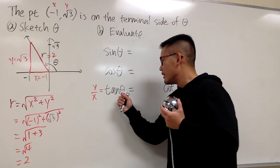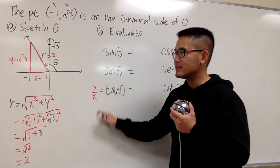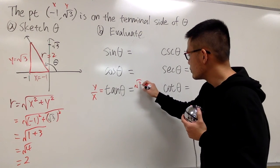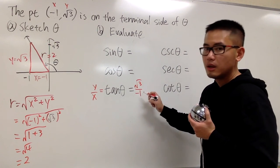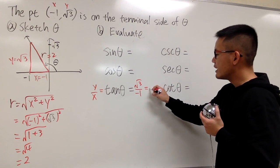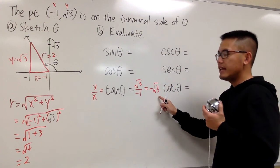But anyways, tangent theta is y over x, which is square root of 3 over negative 1. And let me put this down as square root of 3 over negative 1 first. But of course, we can rewrite this.